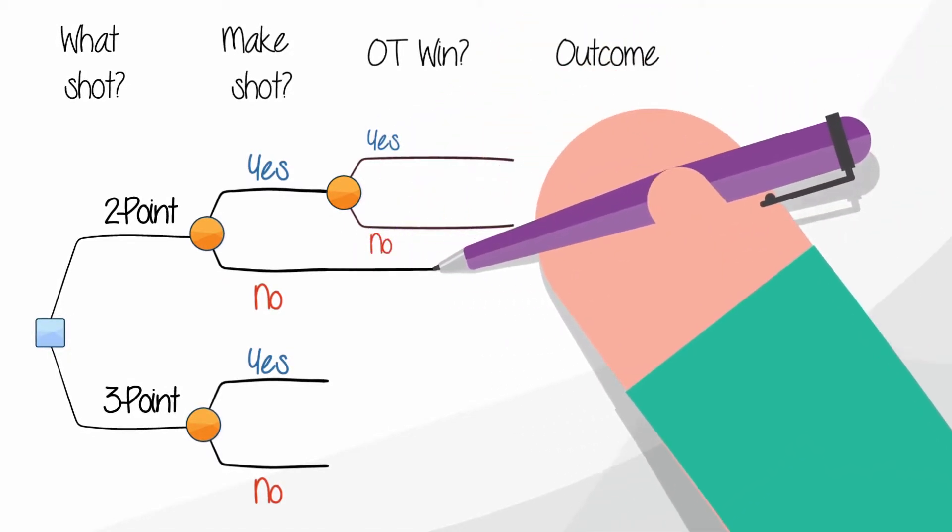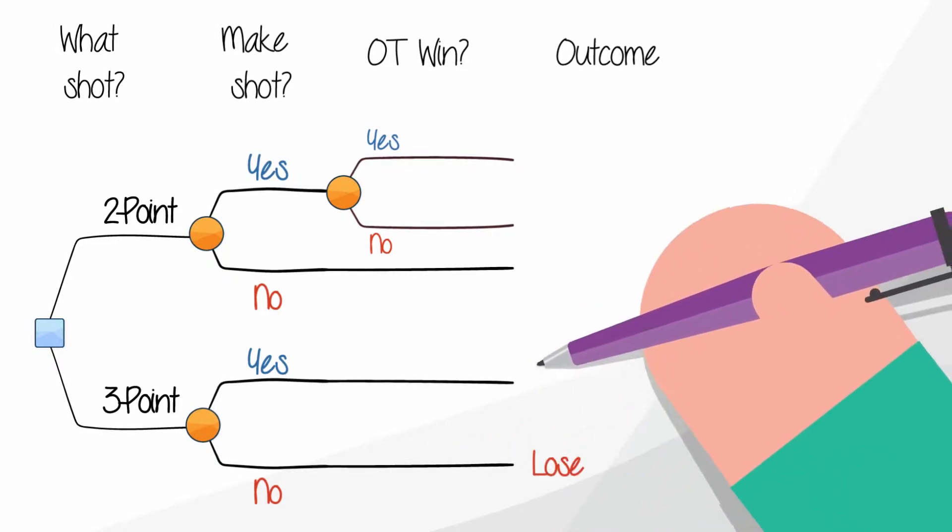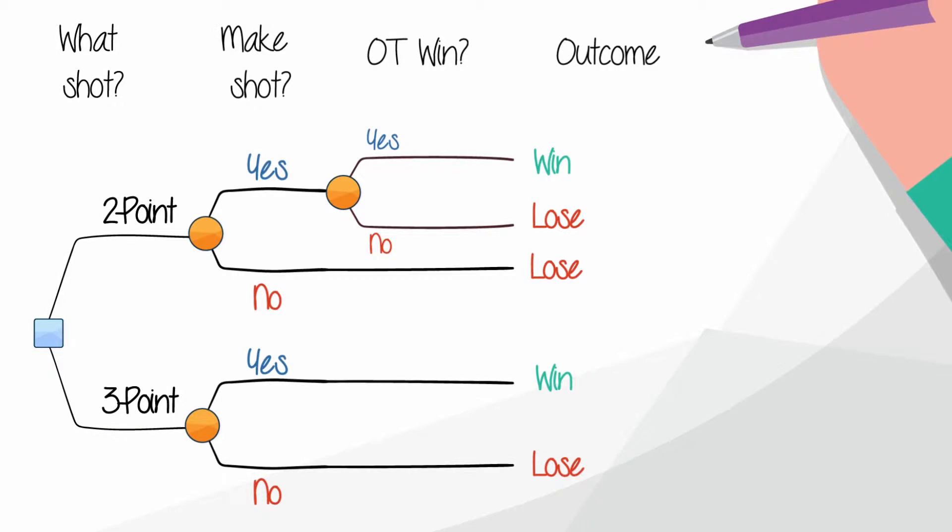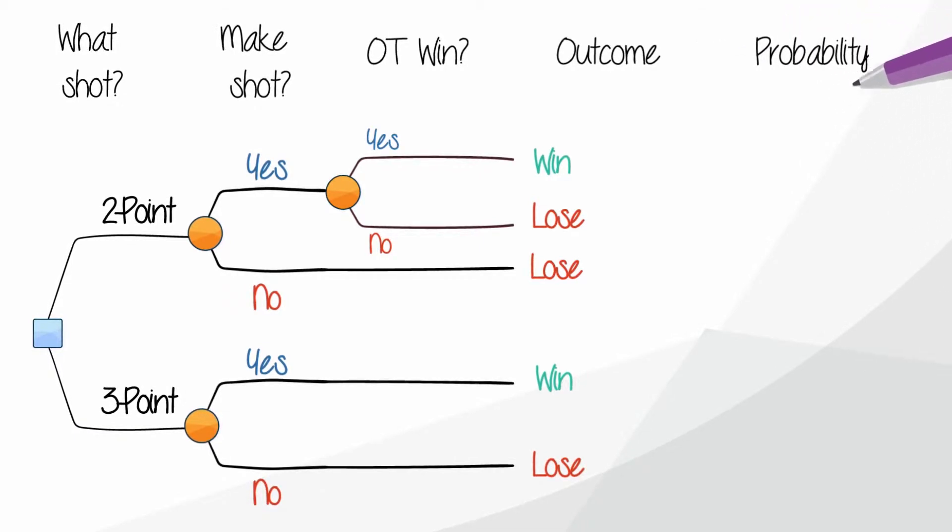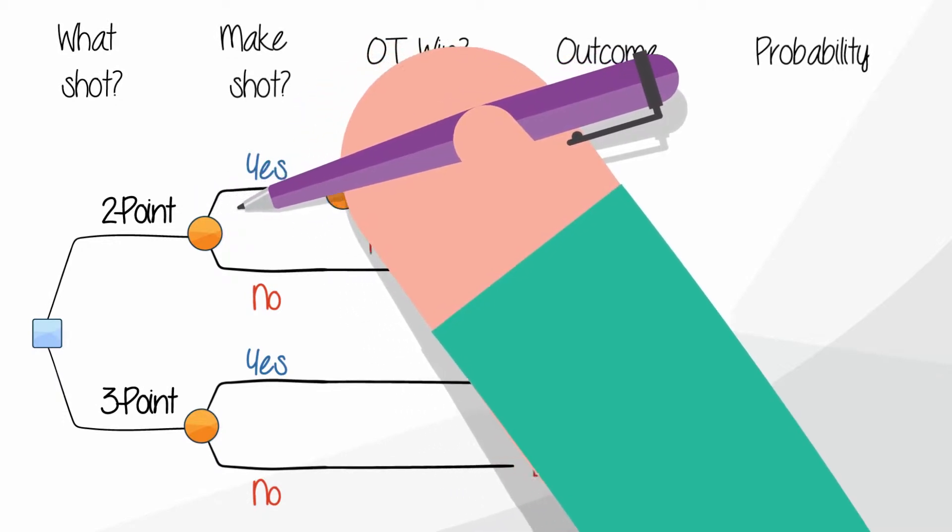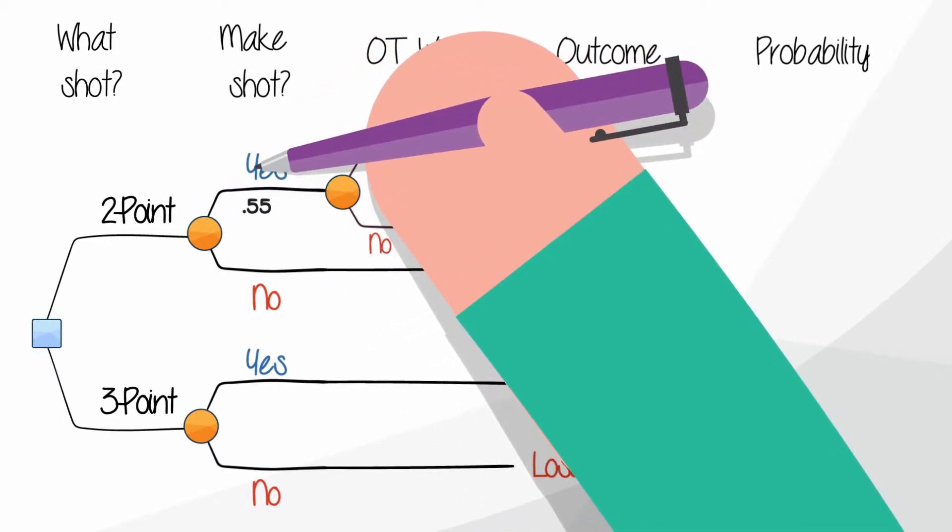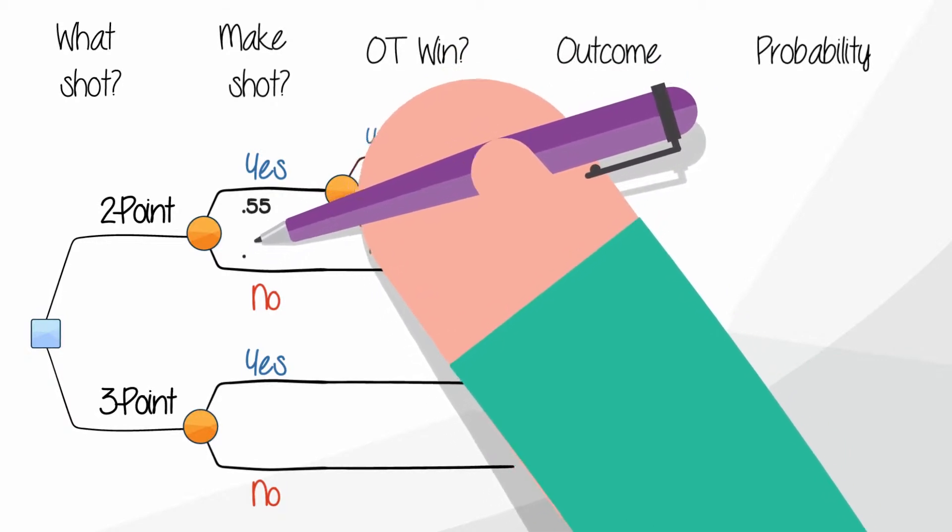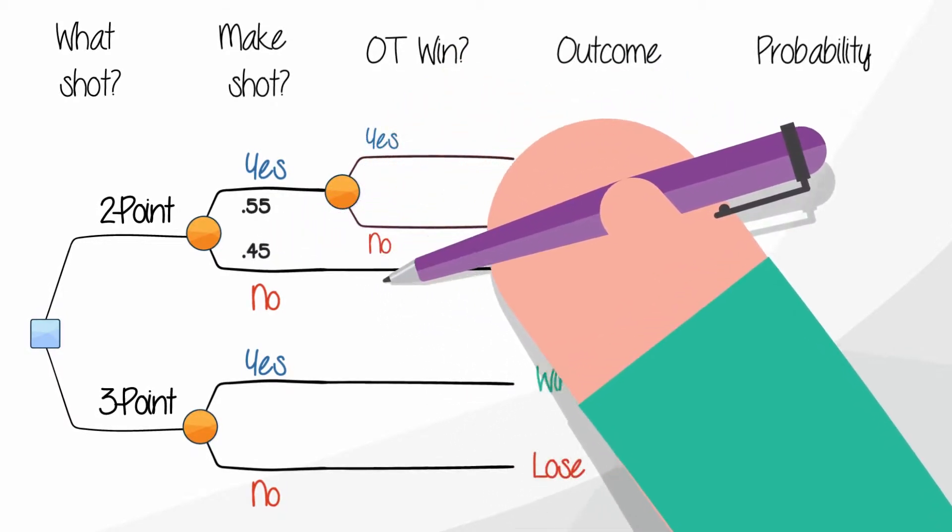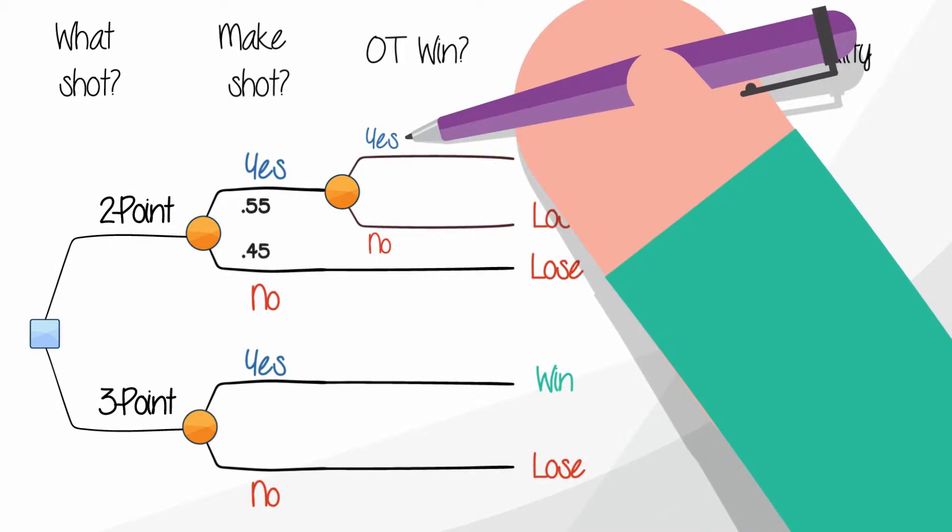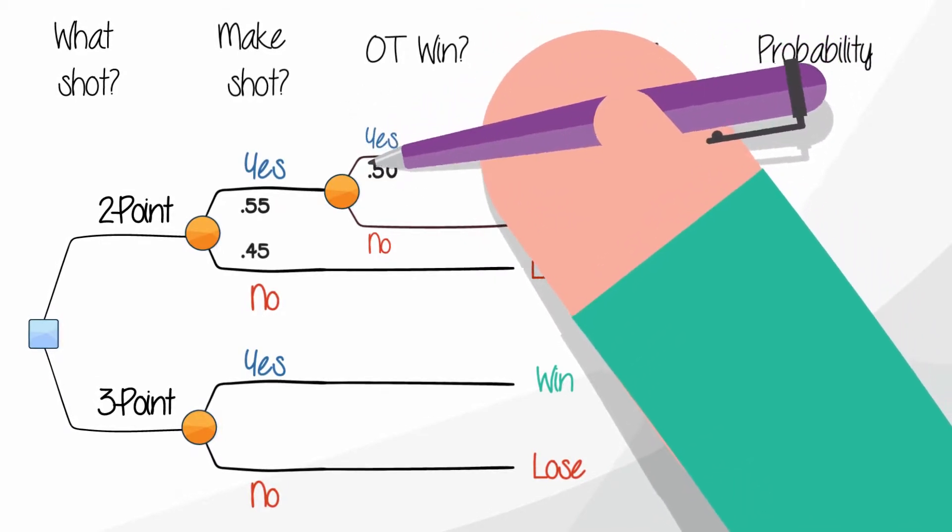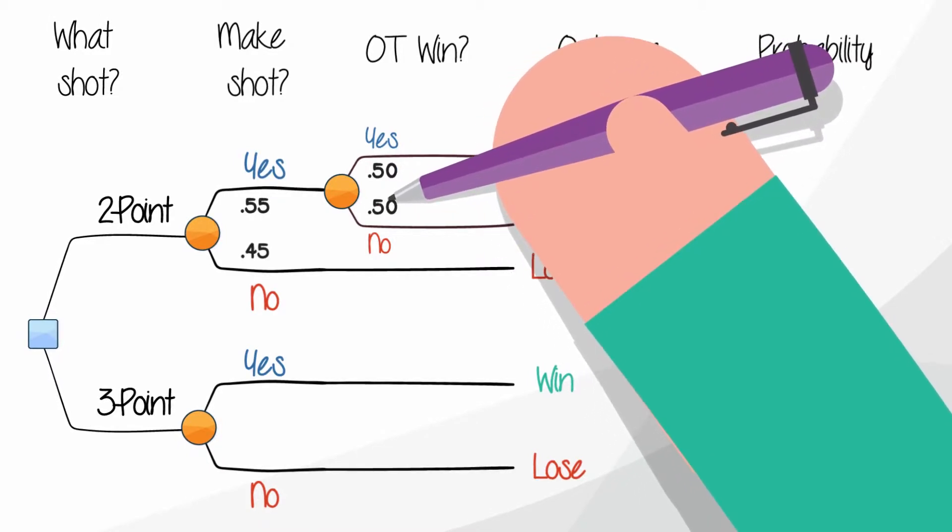Next, you'll need to represent the possible outcomes at the end point of the various branches. In this case, win or lose. Following that, you'll add probabilities to the tree, starting with the two-point shot. Let's say a good estimate for a two-point jumper based on your year's average is 55%. You would put that probability in the yes branch and that makes the no branch 45%, since they total 100%. Now how about winning in overtime? This might be 50-50, assuming you've been evenly matched this far in the game.